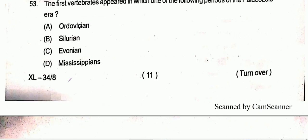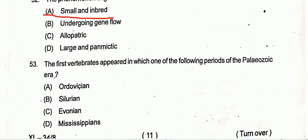Question number 53: The first vertebrates appeared in which one of the following periods of the Paleozoic era? Option B is the correct one, that is the Silurian period.